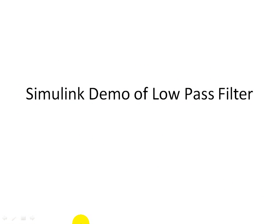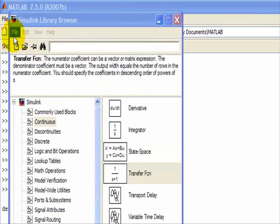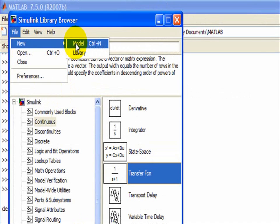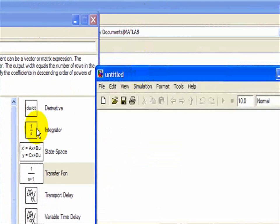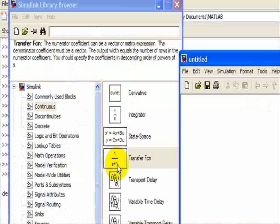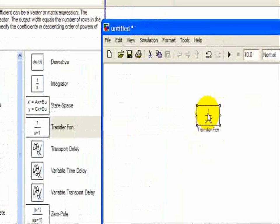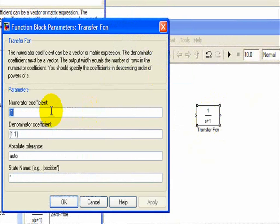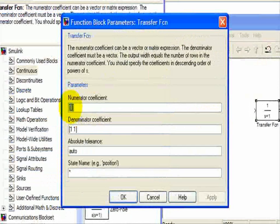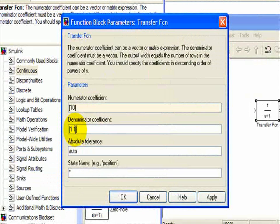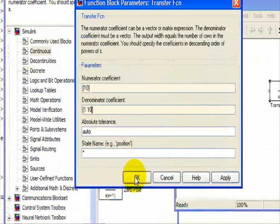Next, we're going to do a Simulink demo of how a low-pass filter affects an input signal with different frequencies. We'll establish a model using Simulink. We're going to use the continuous functions, and we're going to grab this transfer function and configure it as a low-pass filter. Here we'll change the numerator to be 10, and then change this coefficient so the cutoff frequency will be 10 radians per second.